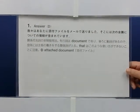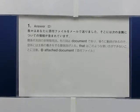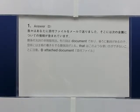The answer is D. 我々はあなたに添付ファイルをメールで送りました。そこには次の会議についての情報が含まれています。関係代名詞の非制限用法。先行詞はドキュメントであり、後ろに動詞があるので、空所には主格な働きをする関係詞が入る。ThatはこのようなNon-restrictive用法ができないことに注意。